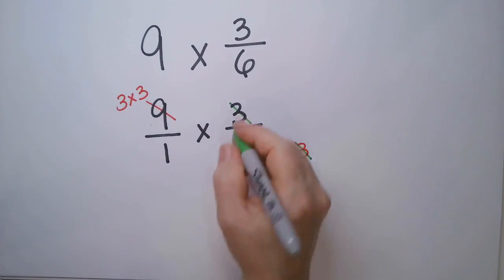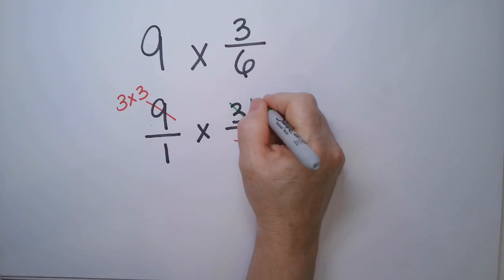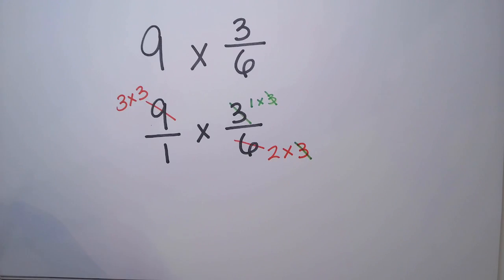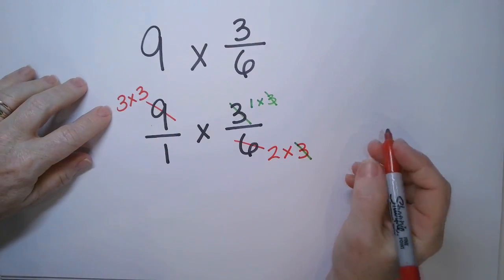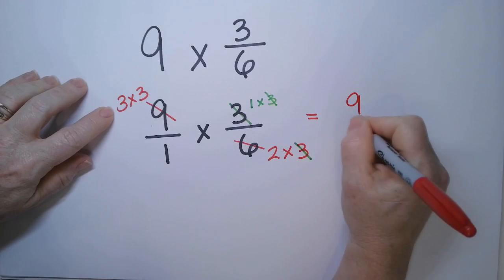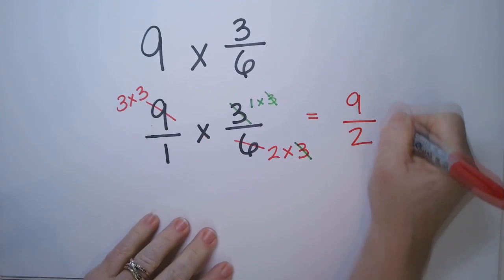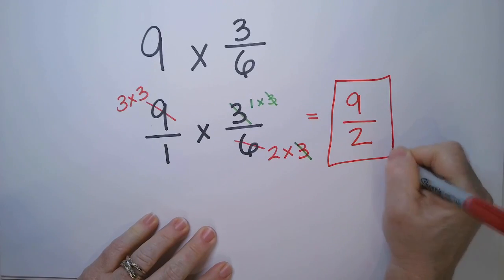This 3 can cancel with that one, that one, or that one. Take your pick. And it becomes a 1, right? Because 3 is 1 times 3. And this 3 is canceling with that one. So then 3 times 3 is 9 over, the only thing left here, 1 times 2. So this becomes 9 halves.